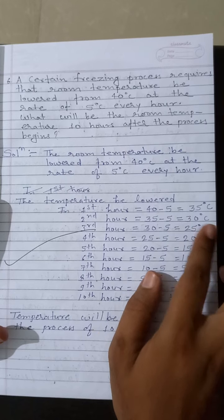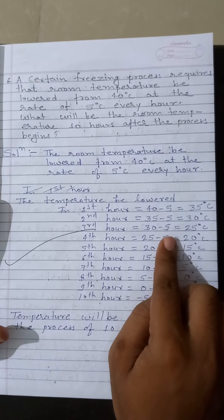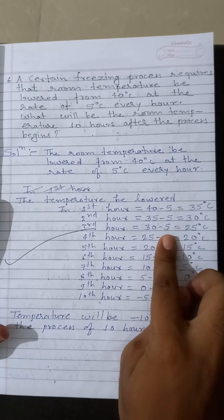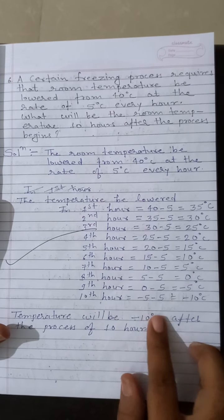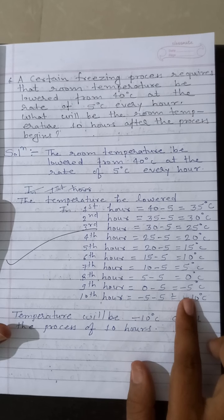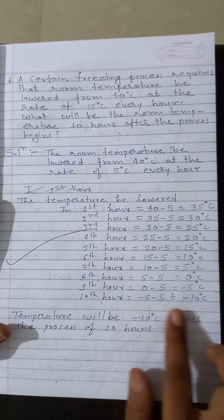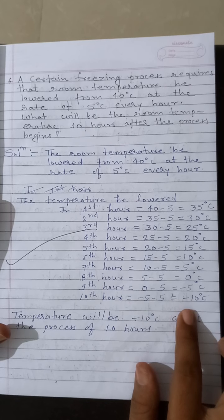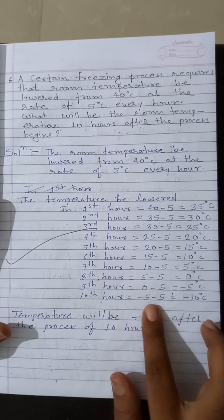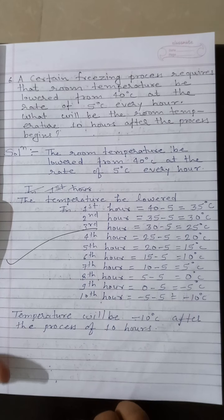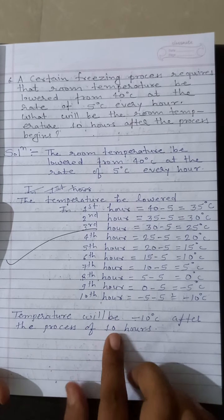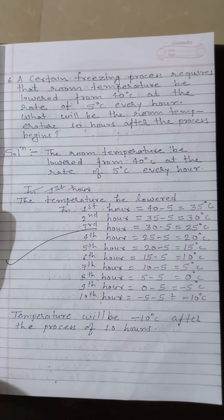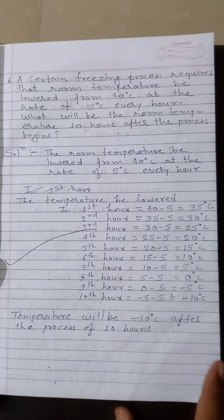In the first hour, temperature becomes forty minus five, which is thirty-five. In the second hour, it becomes thirty degrees Celsius. In the third hour, twenty-five, then twenty, and so on. After ten hours, we subtract five ten times: minus five times ten equals minus fifty. Adding minus fifty to forty: forty plus minus fifty equals minus ten degrees Celsius. The temperature will be minus ten degrees Celsius after ten hours.